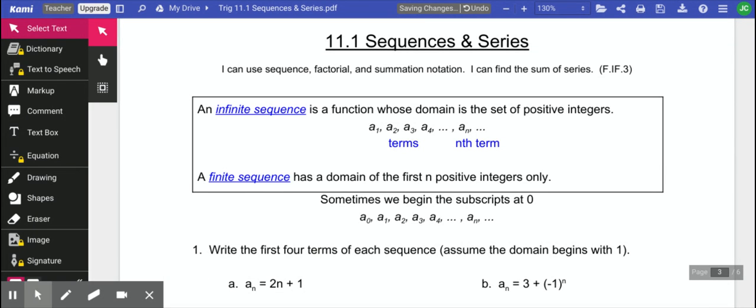Chapter 11, we're going to spend quite a bit of time talking about sequences and series. So just starting out with a couple definitions. An infinite sequence is a function whose domain is a set of positive integers. Infinite means that it doesn't end, it just keeps going on and on.